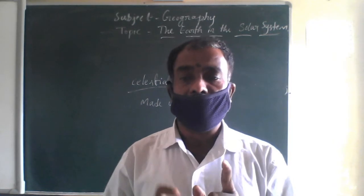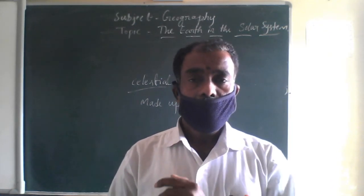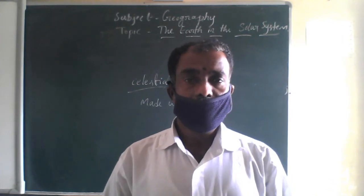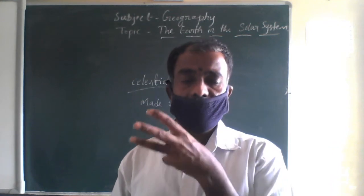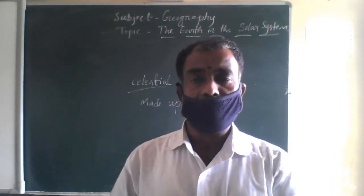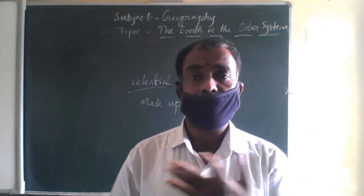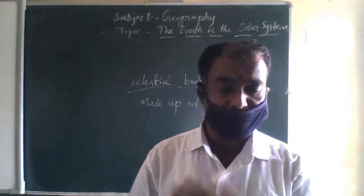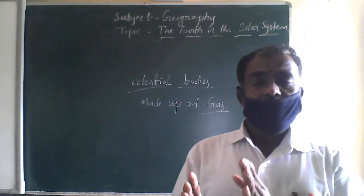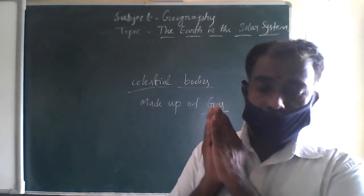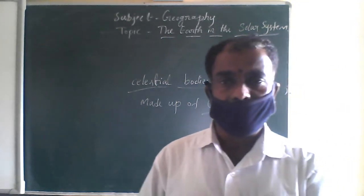We came to know and can understand regarding the origin of the Earth, the sun, and the solar system. According to the Big Bang theory — and there are many theories regarding the origin of the universe, as well as the origin of the solar system and how the different planets and satellites formed — basically these celestial bodies are made up of hot gases, different gases, and they are so hot.